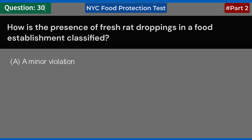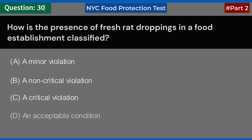How is the presence of fresh rat droppings in a food establishment classified? A. A minor violation. B. A non-critical violation. C. A critical violation. D. An acceptable condition. Answer: C. A critical violation.